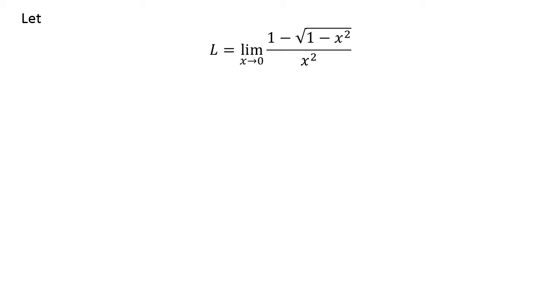Let L be equal to limit of 1 minus square root of 1 minus x squared upon x squared as x approaches 0. As multiplying the numerator and denominator by a common factor does not change the value of the fraction, let us multiply the numerator and denominator by minus 1. So we get L equals limit of square root of 1 minus x squared minus 1 upon minus x squared as x approaches 0.